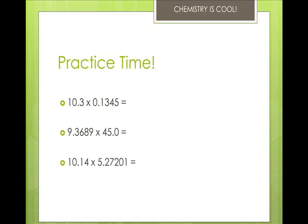Let's take a look at some practice ones. I'm going to do number one with you and then you're responsible for doing number two and three on your own. The first one is 10.3 times 0.1345, and your answer is 1.39 because you have three significant figures in 10.3. Now I want you to multiply 9.3689 times 45.0 and then 10.14 times 5.27201. Keep in mind, you should always have a calculator with you while listening to these lectures.